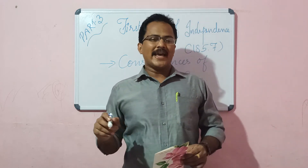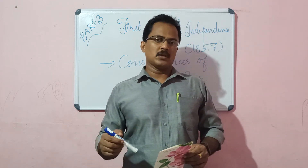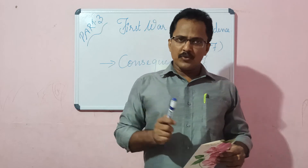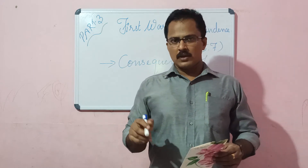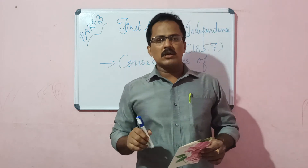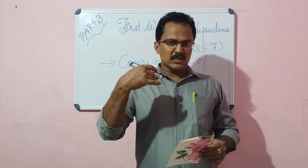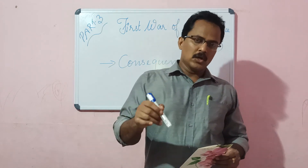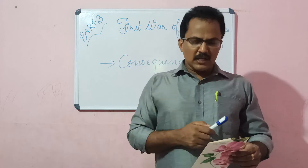Each of these points are explained in a PowerPoint presentation attached to this video. The first consequence is the end of the company's rule, also given under the heading: the provisions of the Government of India Act of 1858. Sometimes the question can come — what were the provisions of the Government of India Act of 1858 — for which you have to write the sub-points given under the heading the end of the company's rule.